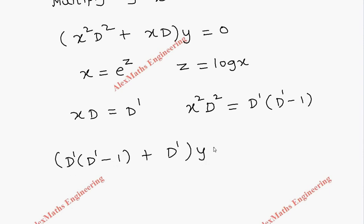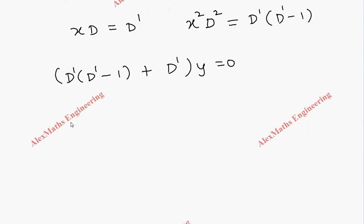We have to multiply this d dash inside so we get d dash square minus d dash plus d dash whole bracket into y equal to 0. After canceling these two terms we are left with d dash square into y equal to 0.